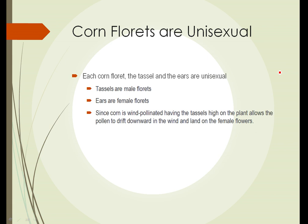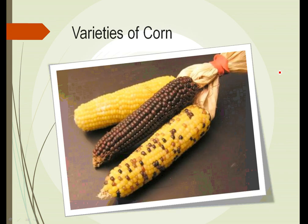Corn is an interesting plant in that it was developed from other plants that were fairly edible. Without human intervention, corn can't multiply and grow by itself. So if humans stopped taking care of corn, within a very short period of time — a couple of years — we would have no more corn left on the planet.